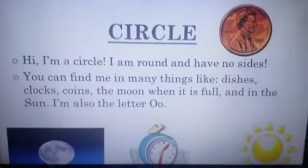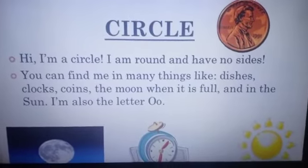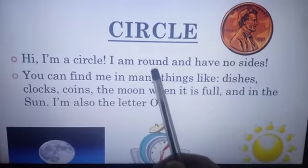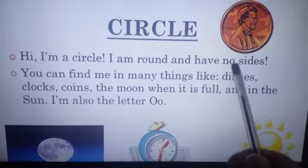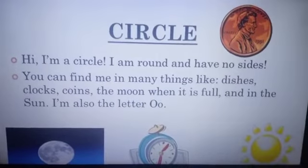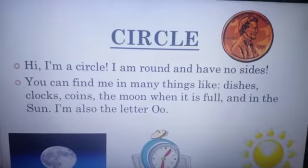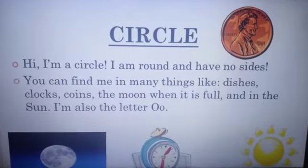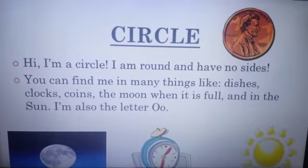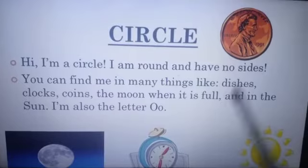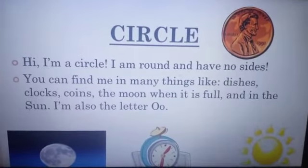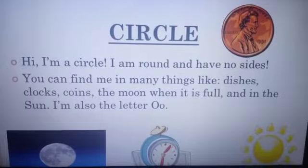The first shape is circle. What is circle saying to you? Hi, I am a circle. I am round and have no sides. Circle is round and has no sides. Circle doesn't even have any corners. No sides, no corners, and round in shape.